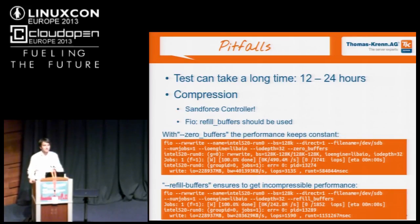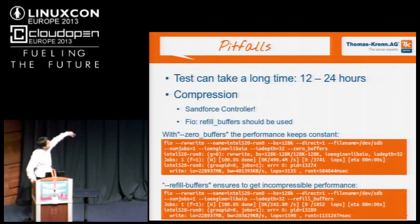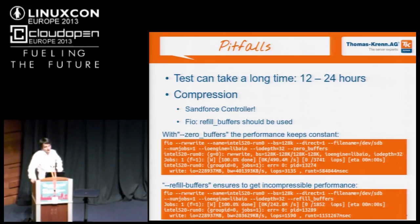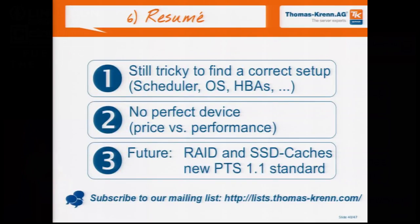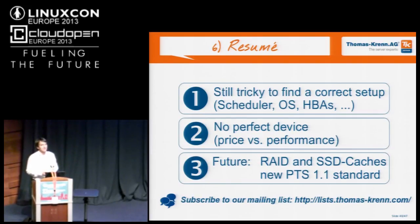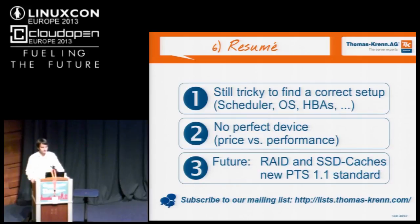Another pitfall is compression — some SSDs do compression and we don't want to measure compressible performance; we want incompressible performance. We use the FIO option called refill_buffers. You can see in the orange boxes that IOPS and throughput are quite different depending on whether you measure compressible or incompressible performance. To get comparable results, we decided to make a dedicated server for testing all our drives — the same server is used only for performance testing, and we don't change the setup, which gives us comparable results.